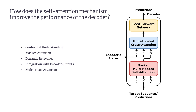Fifth, multi-head attention: transformers use multi-head attention in both the encoder and decoder, meaning the model runs multiple attention mechanisms simultaneously. Each attention head focuses on different aspects of the data — for example, one head might analyze word-to-word relationships while another looks at phrase-level patterns. By combining these diverse perspectives, multi-head attention enables the decoder to capture complex dependencies in the sequence, enhancing its overall performance.